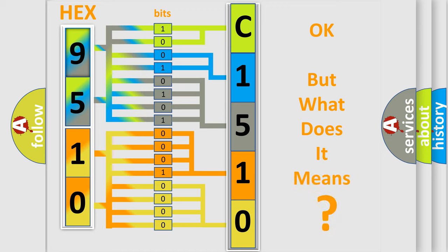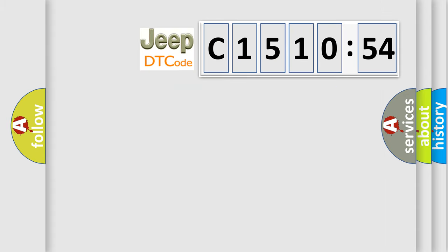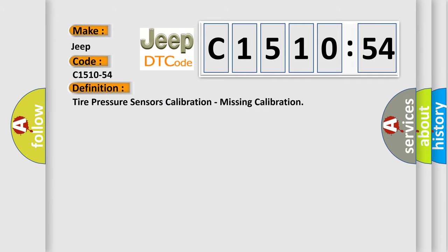The number itself does not make sense to us if we cannot assign information about what it actually expresses. So, what does the diagnostic trouble code C1510-54 interpret specifically for Jeep car manufacturers?